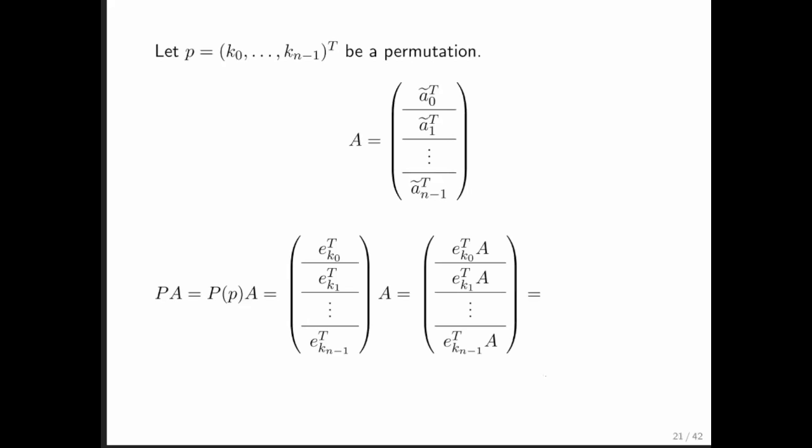Again, we can do partitioned matrix matrix multiplication to get to that point. And then we recognize that each of these simply picks out the appropriate row. And you notice that all that happens is that the rows of matrix A are reshuffled.